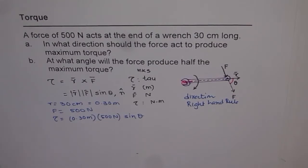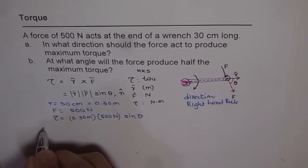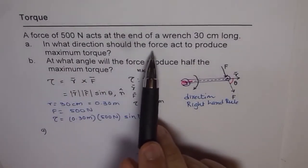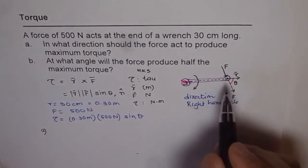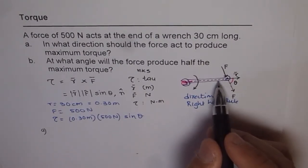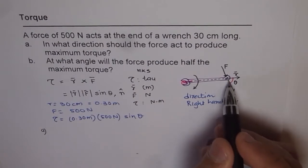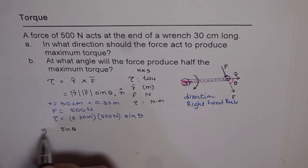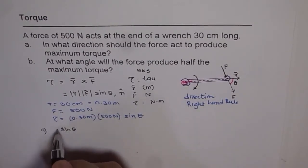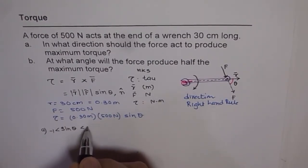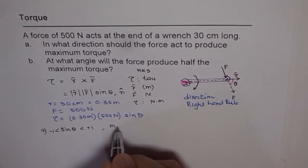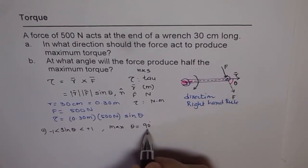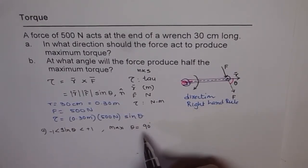Now part A. In what direction should the force act to produce maximum torque? Direction here literally means the angle between the radial arm and the force. The direction is given by this theta. As you know, sine theta is maximum for theta equals to 90 degrees. Sine theta has a range from minus 1 to plus 1. You get maximum when theta equals to 90 degrees. When theta is 90 degrees, sine theta is 1.